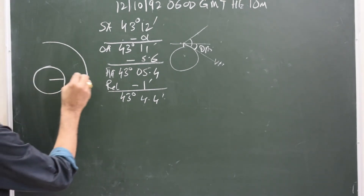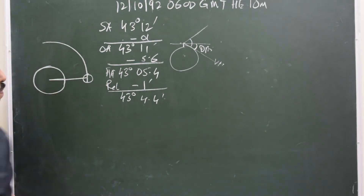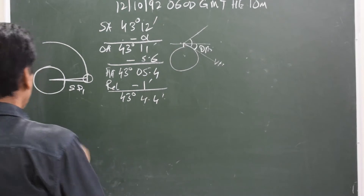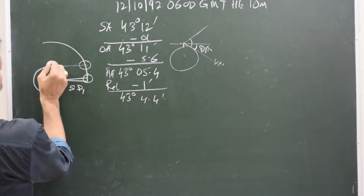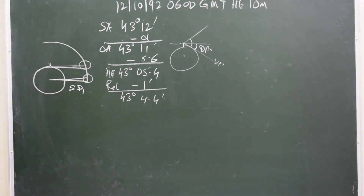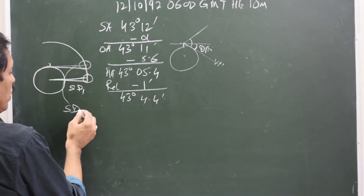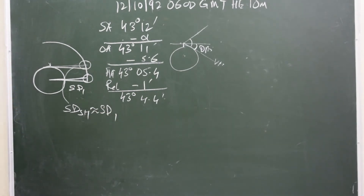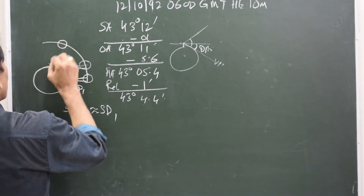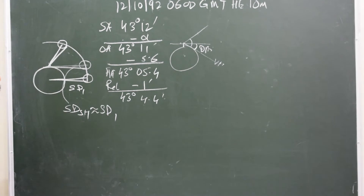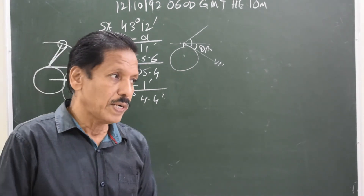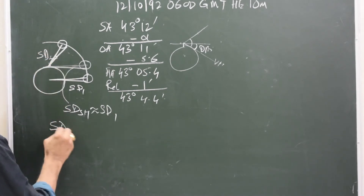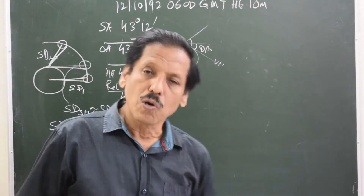The semi-diameter of the moon given in the almanac is as seen from the center of the earth — that is SD1. When the moon is on the sensible horizon, the distance from the observer to the moon is more or less the same as from the center of the earth, so the semi-diameter as measured at the sensible horizon is approximately equal to SD1. But when the moon rises in altitude, the distance decreases, so the semi-diameter as measured when the moon is at altitude — SD2 — is more than SD1. Semi-diameter is inversely proportional to distance. The difference between SD2 and SD1 is called augmentation of moon semi-diameter.